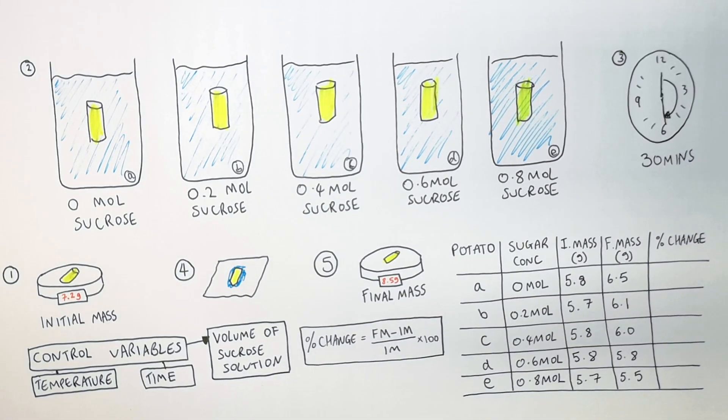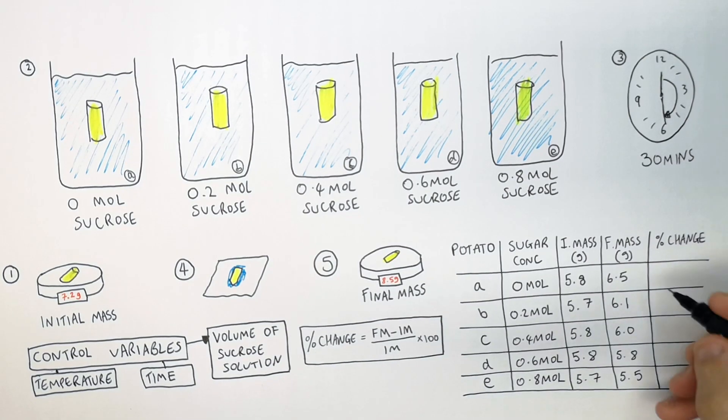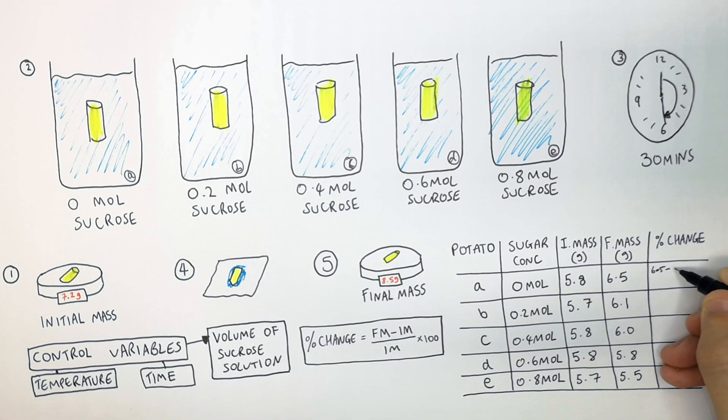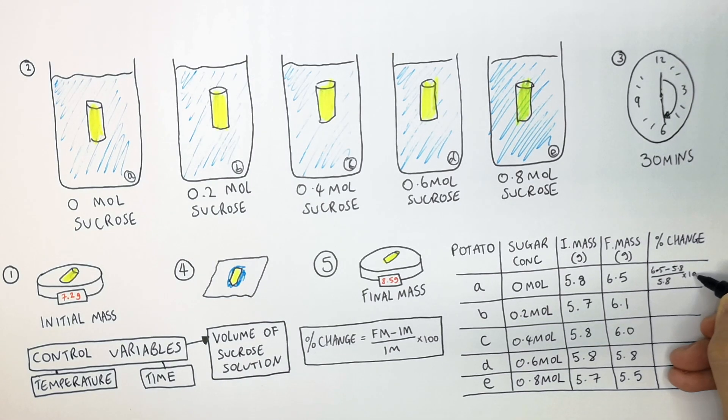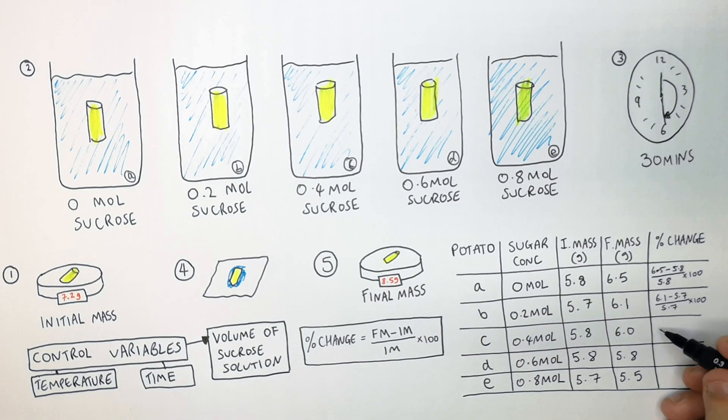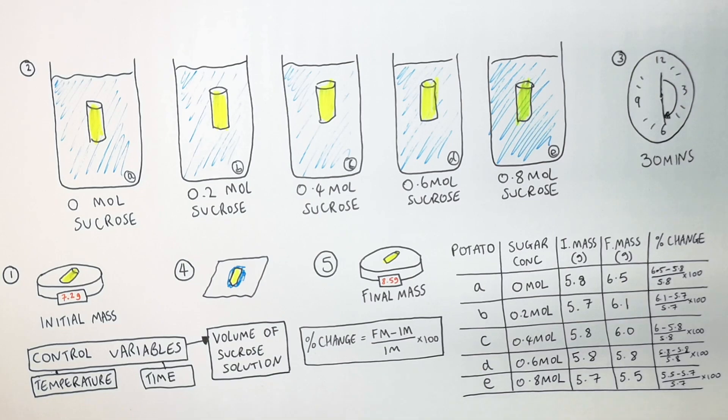So for each potato, you calculate the percentage change. So the first one is going to be 6.5 minus 5.8 divided by 5.8 times by 100, then it's going to be 6.1 minus 5.7 over 5.7 times by 100. And this process repeats itself. It is the final mass minus the initial mass divided by the initial mass times by 100. And you can get, and will get, both positive and negative percentage change of masses.